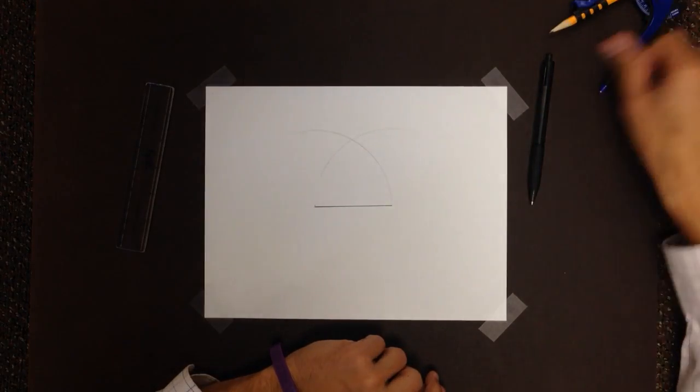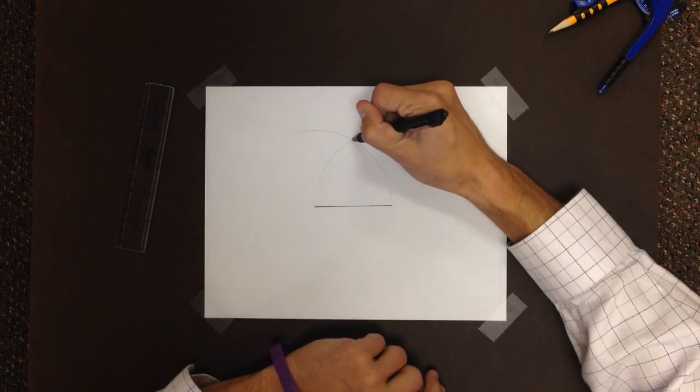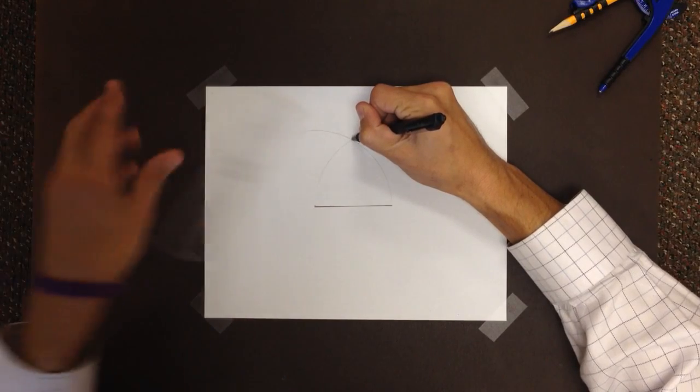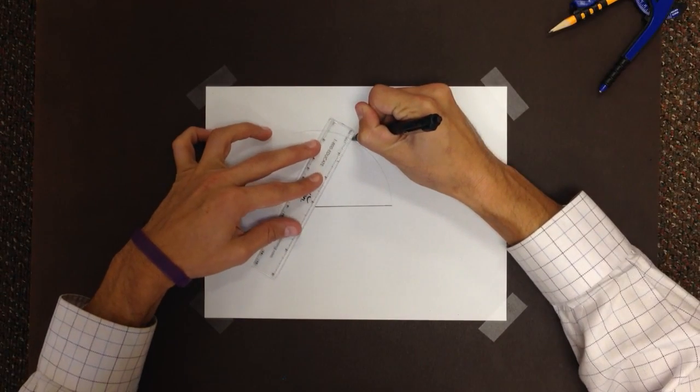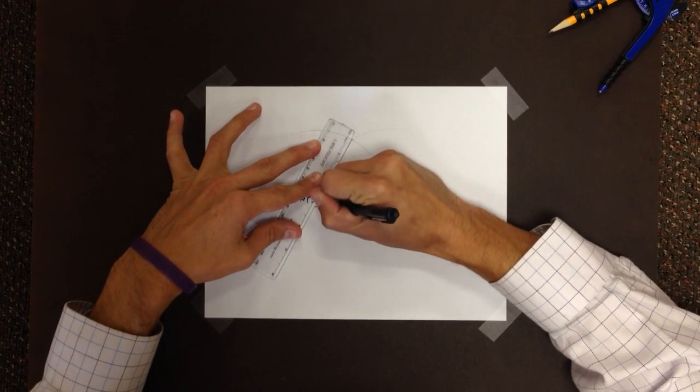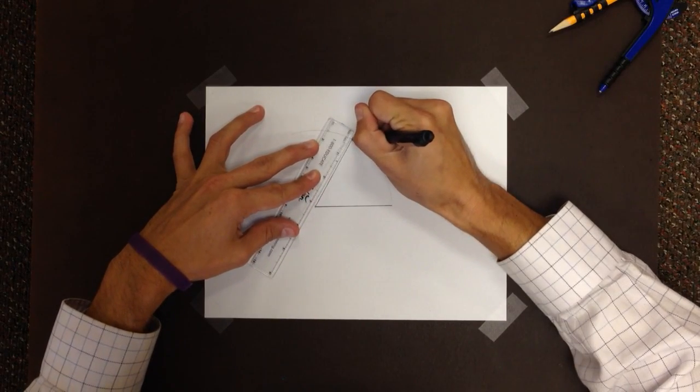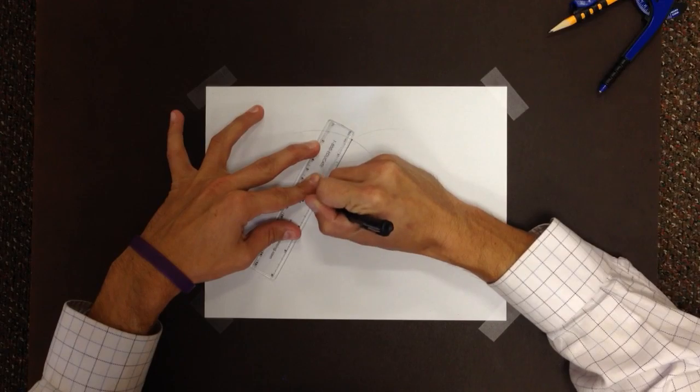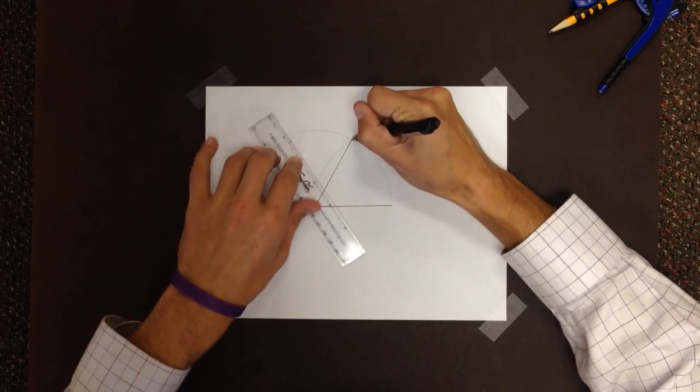So all we need to do is, aha, got it. From this point right here, I'll just draw a line from the intersection to this side. Make sure it's a little more accurate. And do the same thing over here.